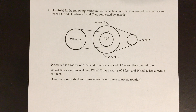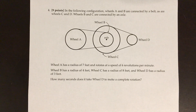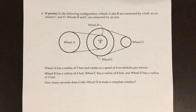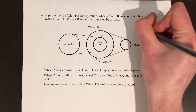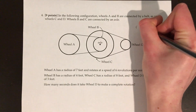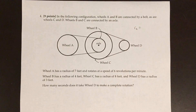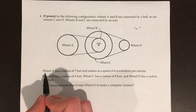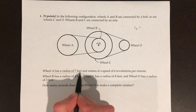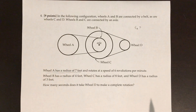Whenever you're dealing with a belt and wheel problem, there are three things you need to identify for each wheel. The first is the radius — so we might say the radius of wheel A, R of A. We know the radius of wheel A: it's 7 feet.